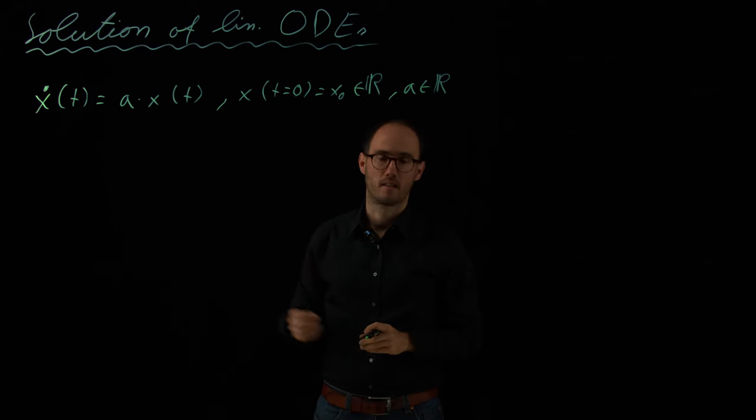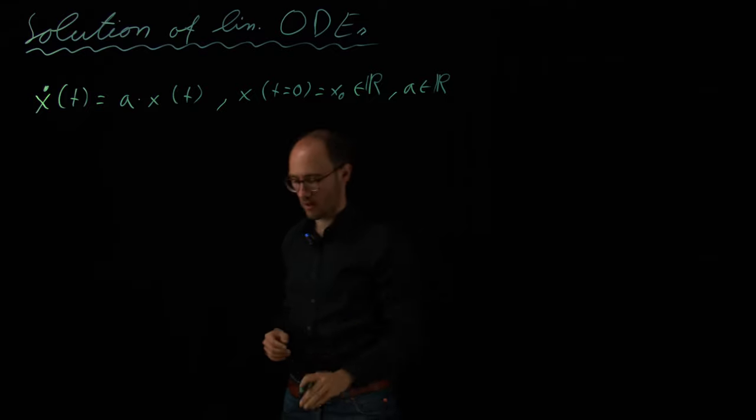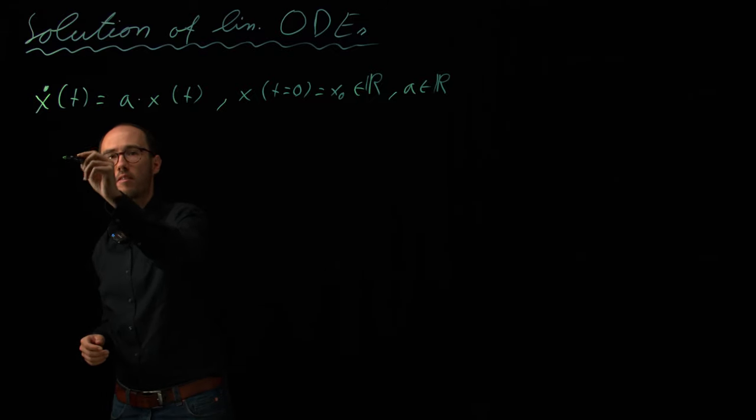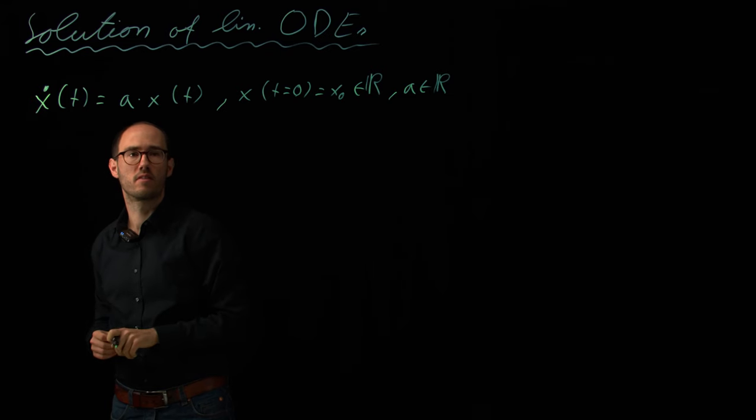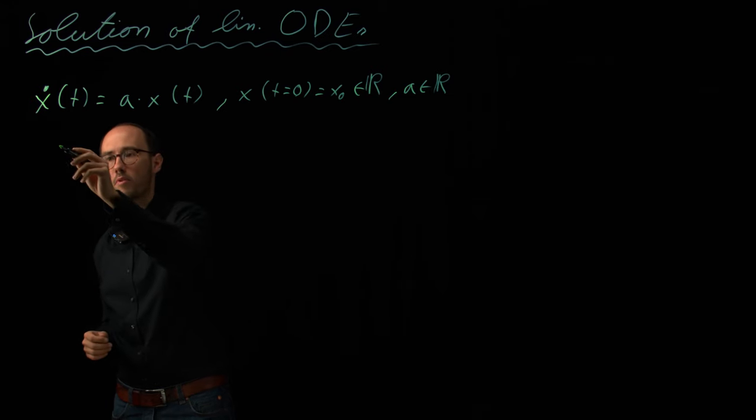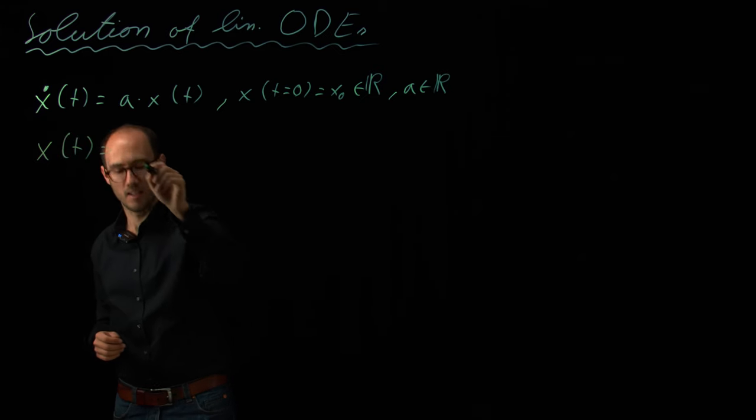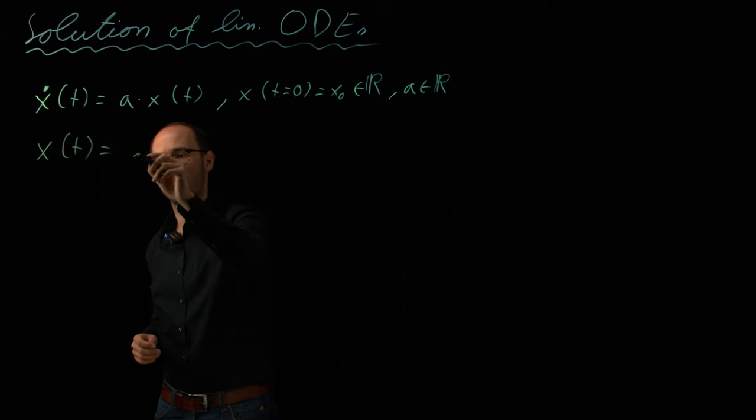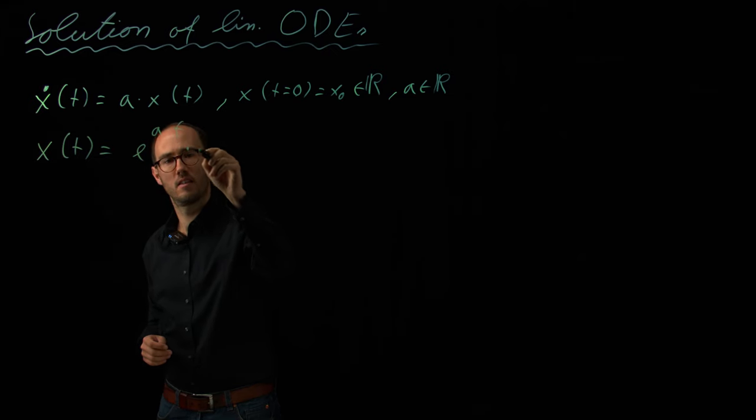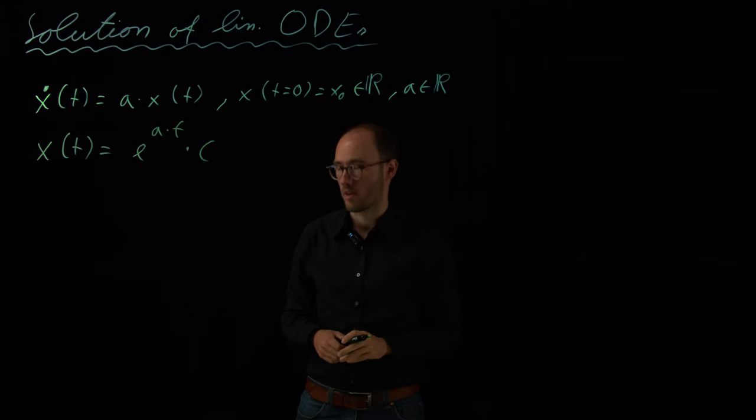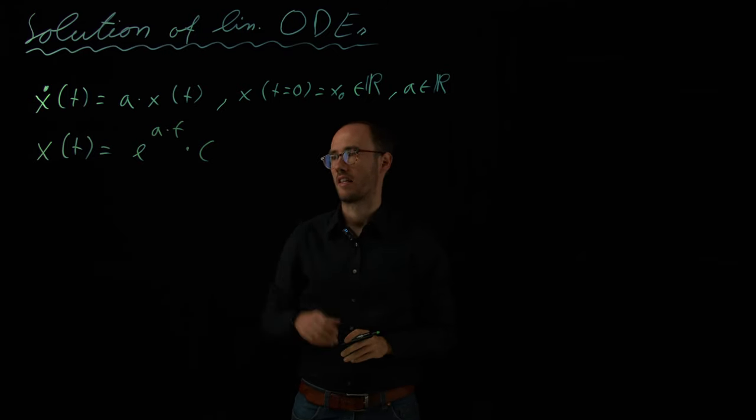And for this, we need an approach equation or an ansatz equation. And in order to do that, I postulate that a potential solution of this ODE or initial value problem could be x of t is equal to e to the power of A times t times some integration constant C, which we are going to investigate later.